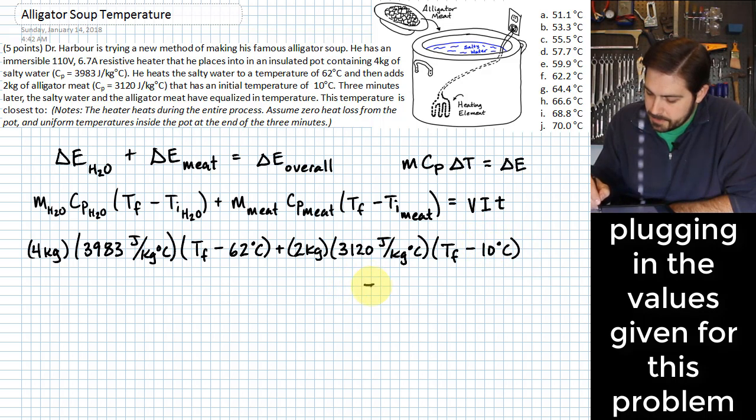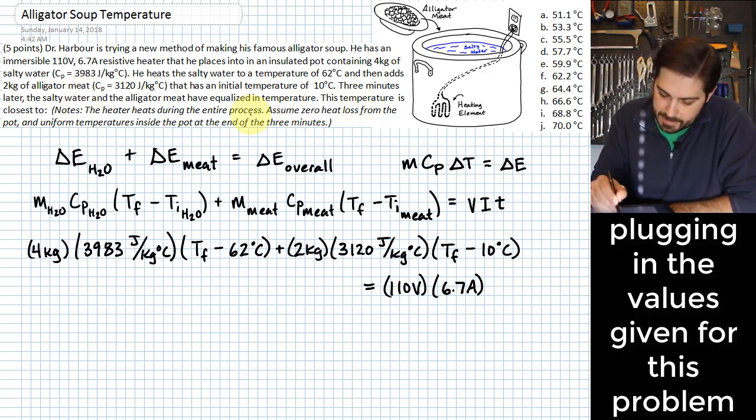This is all going to be equal to the voltage, 110 volts, times 6.7 amps, times the amount of time, and the amount of time that this takes place, it says right here, 3 minutes.